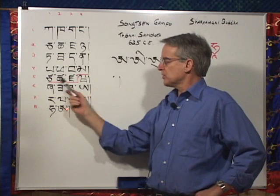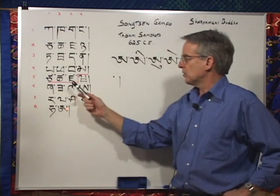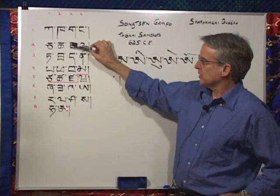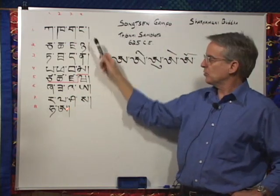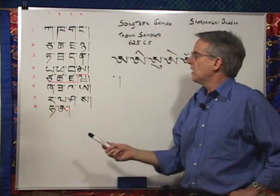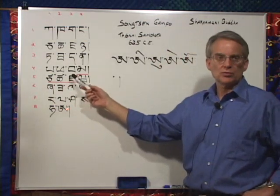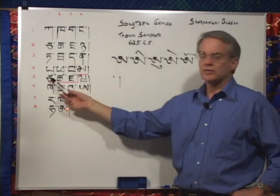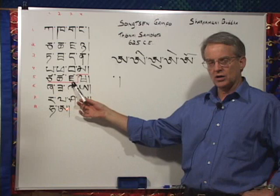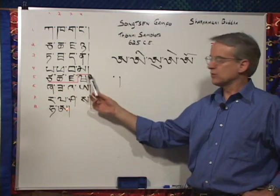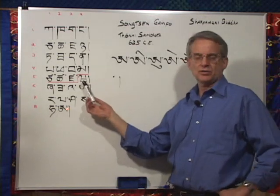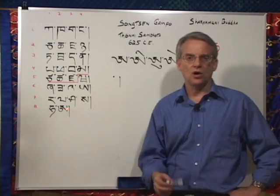The fifth row — the first three letters are in appearance very like the first three letters in the second row, with the exception that these have a small flag on them. These sounds are also made at the roof of the mouth: ca, ca, za. And then the fourth — we've crossed over the demarcation line, the red line. The fourth sound in the fifth row is made at the lips: wa.